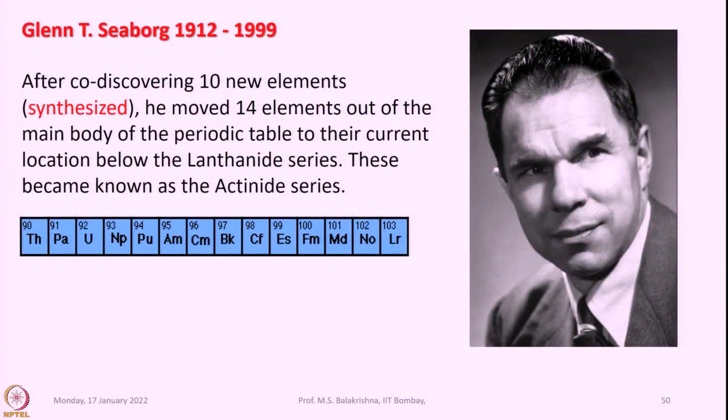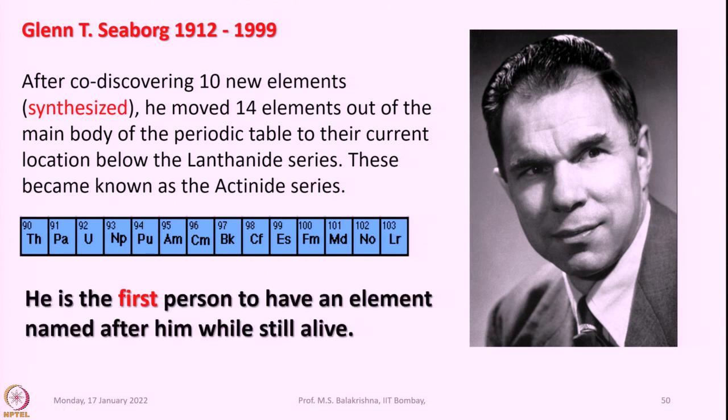It is appropriate to remember Glenn T. Seaborg when it comes to post-uranium elements or man-made elements. After co-discovering 10 new elements synthesized in the laboratory, he moved 14 elements out of the main body of the periodic table to their current location below the lanthanide series. These became known as the actinide series, from Thorium (91) to Lawrencium (103). He is the first person to have an element named after him while still alive — Glenn T. Seaborg.